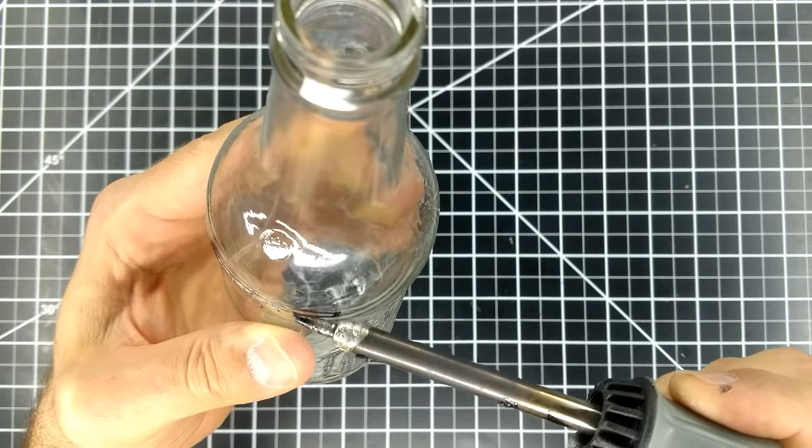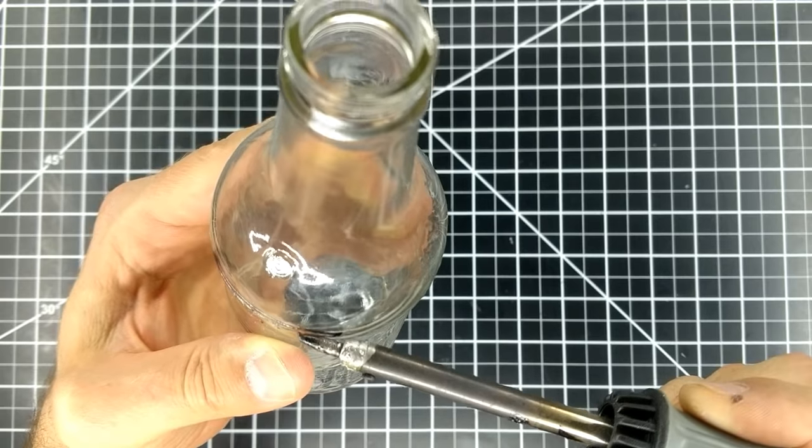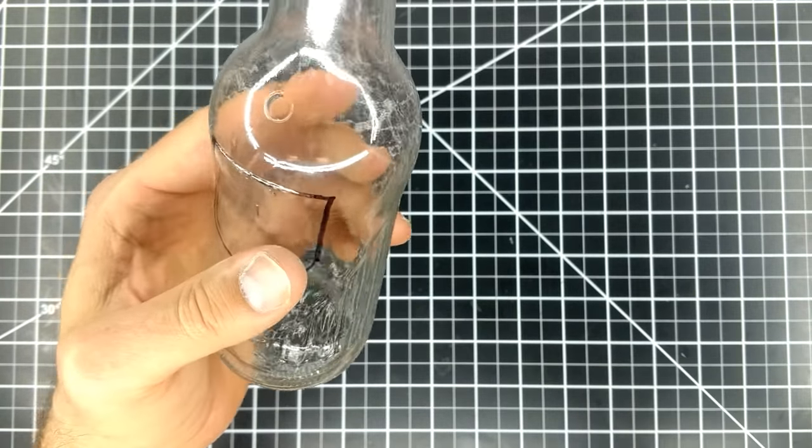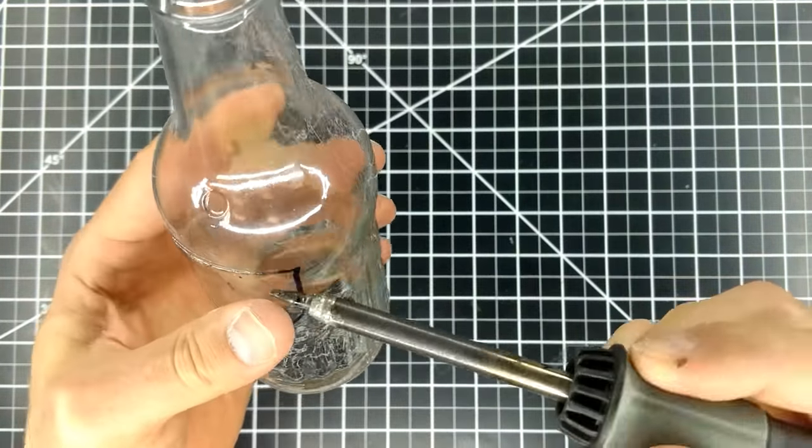Once it does start, continue moving the soldering iron in that direction. The crack should follow the tip of the soldering iron as you move it.